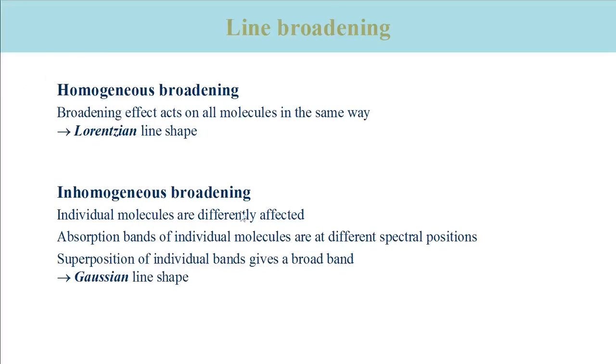Homogeneous broadening broadens the spectrum of a single molecule. The underlying mechanism acts on all molecules in the same way. A Lorentzian line shape function describes homogeneously broadened absorption or emission bands.